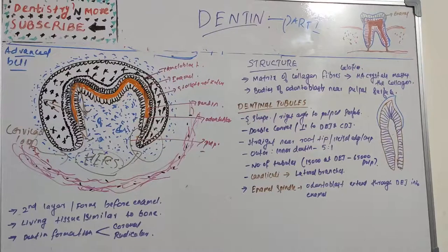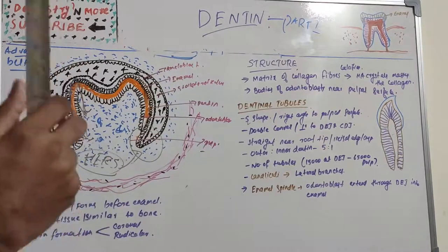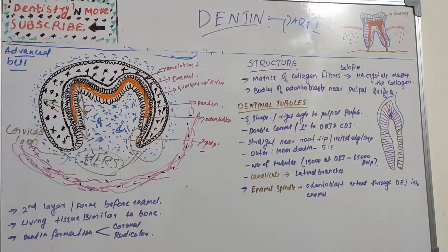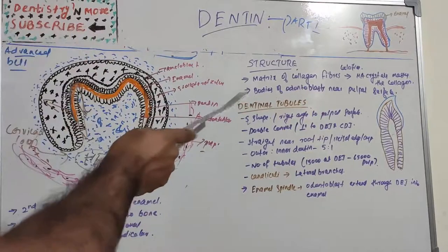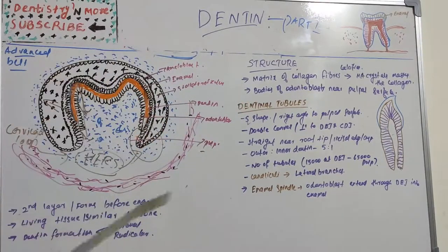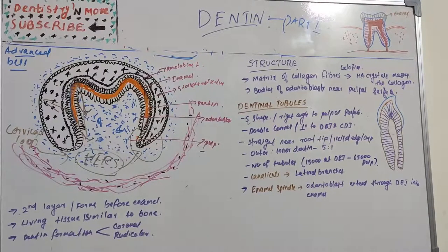Hello everyone, welcome back to a new session in dentistry and more. Today's session is about dentine. We'll be covering this under a few sessions. The first session is about dentine, its formation, its structure, and little details about the dentine. The second part is about various types of dentine, and the last session will cover theories relating to dentine transmission of nerve impulses.